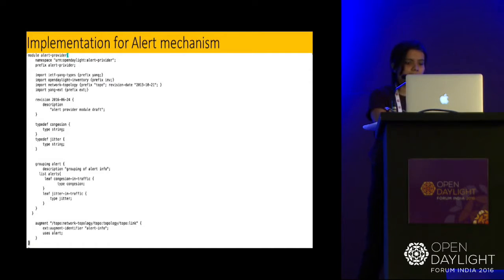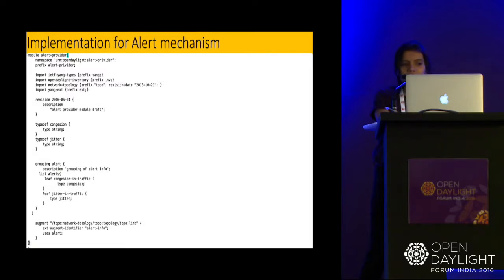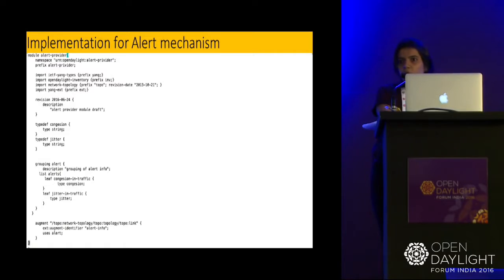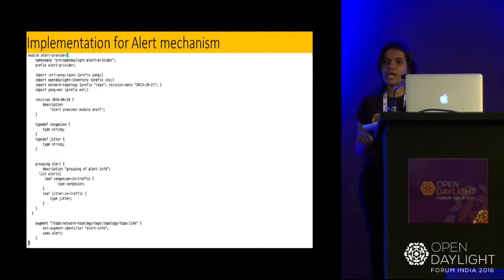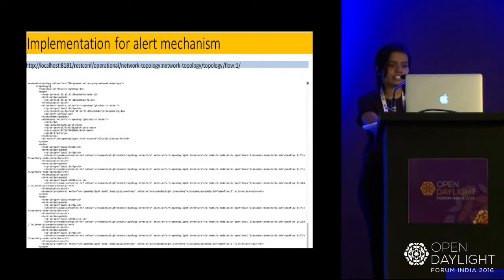This is the topology REST API which is already there. We get all operational information of a topology through this API. For each link — where link is a node — we are attaching alert information. You can see this is the idle condition I was talking about: zero-zero means we don't have any congestion or jitter, so for this information the color code will be green. This is the idle condition for our use case.